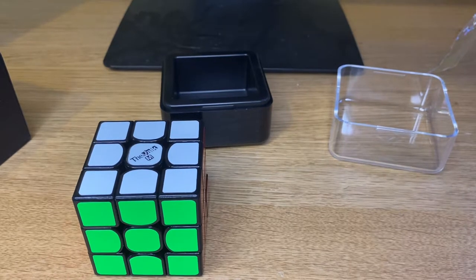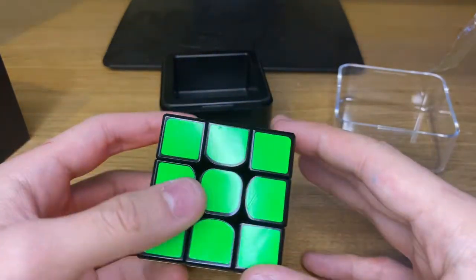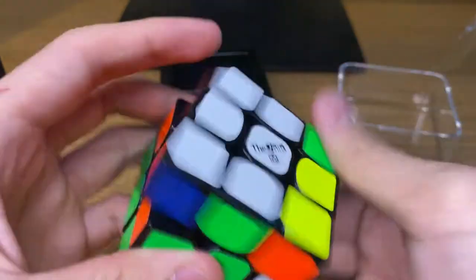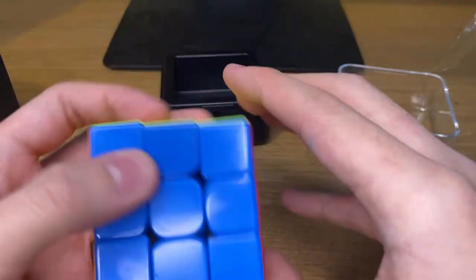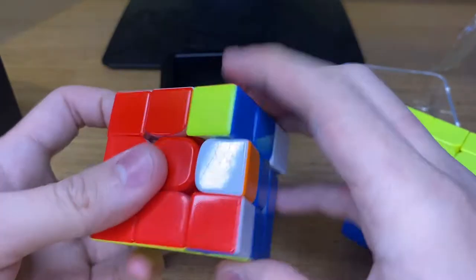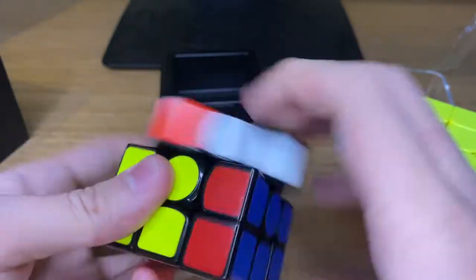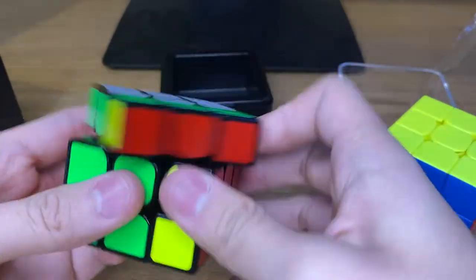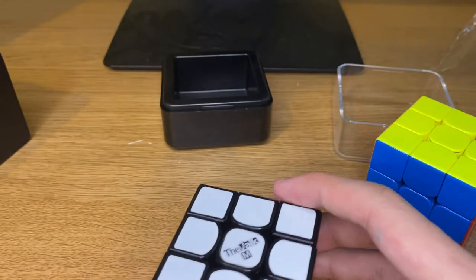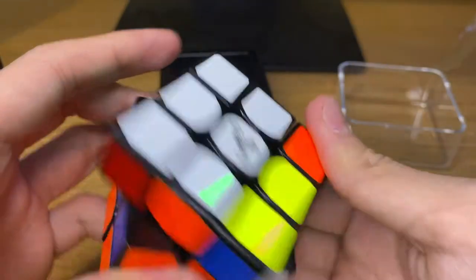So comparing to my other 3x3s, this is my RS3M, this is how loud it is. This is my Tanglong V2. This is my GAN X. Let's listen to this. Yeah, it's actually pretty quiet unlike the RS3M which sounds like this. I really like the blocky feel of the cube.